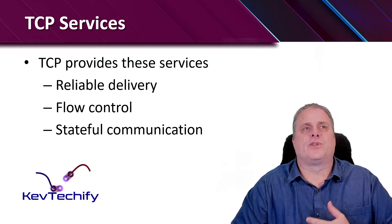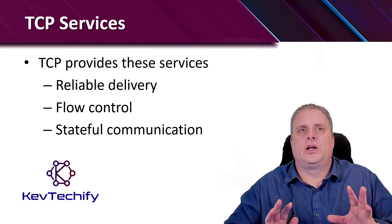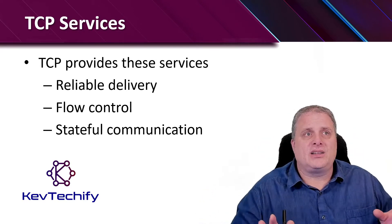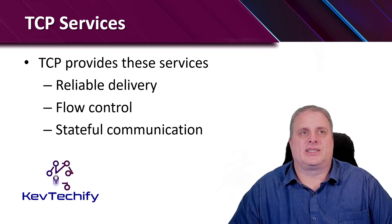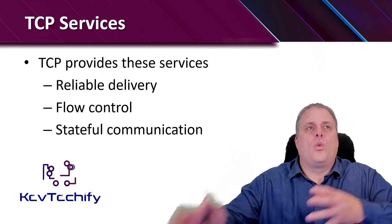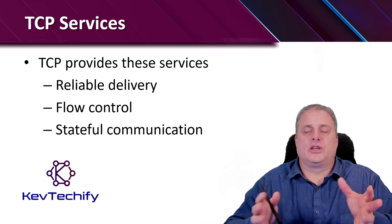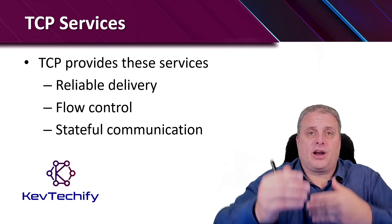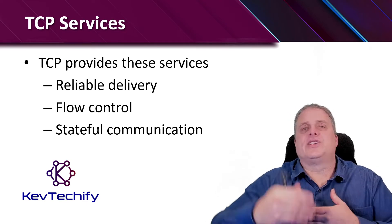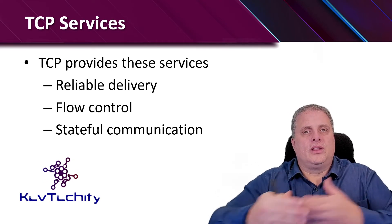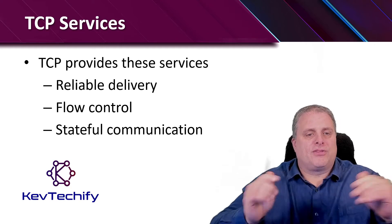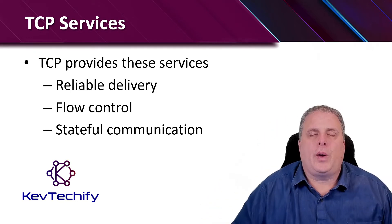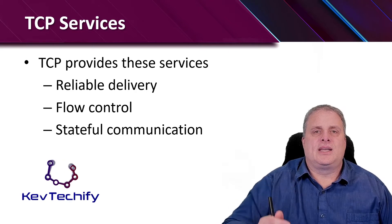The second service is flow control. TCP implements flow control to acknowledge one segment at a time, and multiple segments can be acknowledged with a single acknowledgment segment. We want to acknowledge what pieces are delivered and control how many pieces of information are being sent out. Until we get an acknowledgment, we're not going to send any more, so we control the number of segments that are outstanding. Finally, stateful communication is between two parties that requires a three-way handshake to make sure data gets delivered.